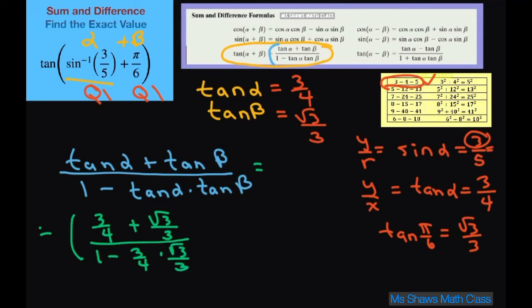So this gives me 9 plus 4 square root of 3 divided by 12. And then because you have to get your common denominator, you have 12.